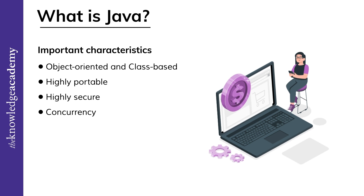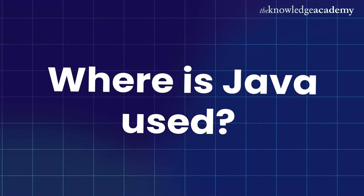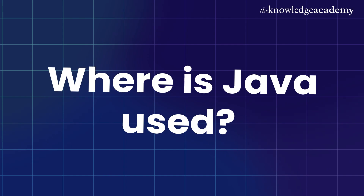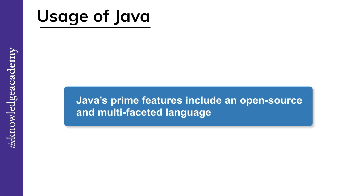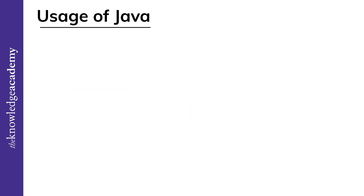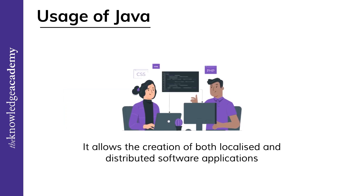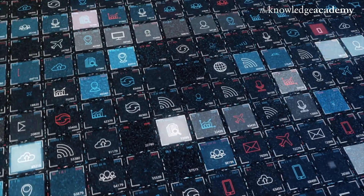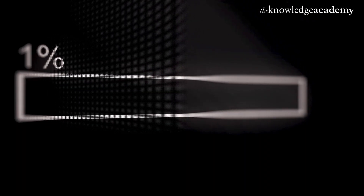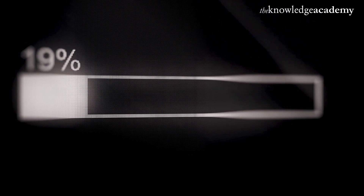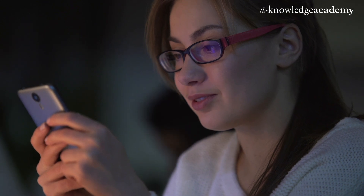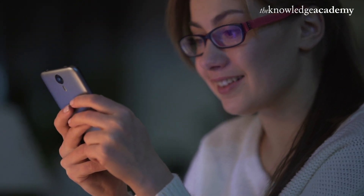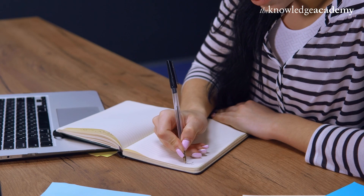Finally, there is concurrency. Java enables the operation of multiple programs simultaneously, hence improving efficiency. Now we are going to explore where Java is used. Java's primary features include being an open-source and multi-faceted language. It allows the creation of both localized and distributed software applications. A massive number of applications use Java — in fact, these applications will not function unless you have a Java environment installed.